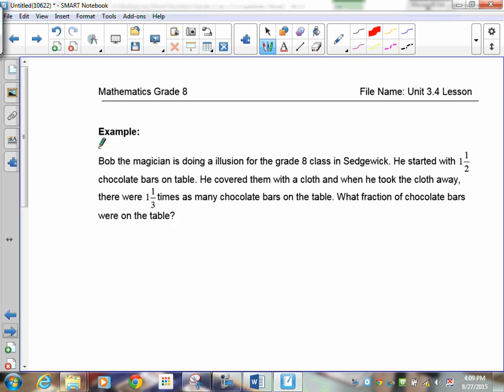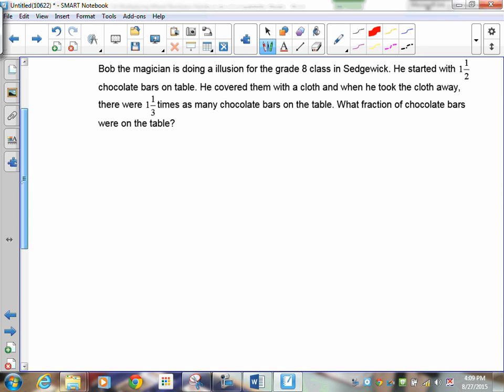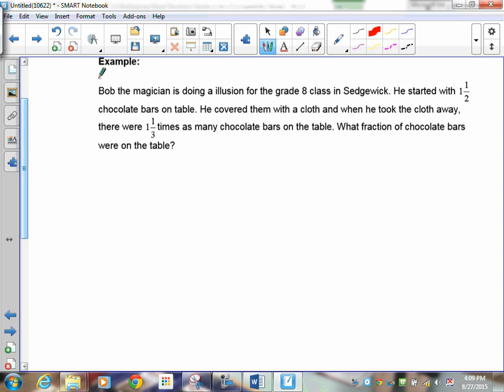Turn the page. Bob the Magician is doing an illusion for the grade 8 class in Sedgewick. He started with 1 and a half chocolate bars on table. He covered them with a cloth. And when he took the cloth away, there were 1 and a third times as many chocolate bars on the table. What fraction of chocolate bars were on the table? So I'll give you a moment. Do this question. So pause the recording and do it.